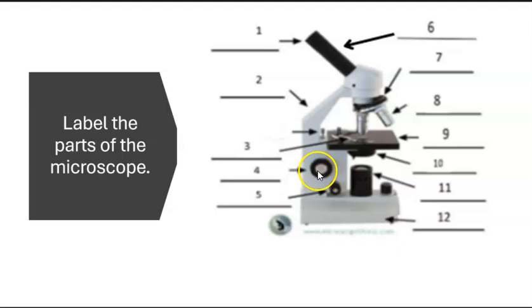Number 4 is the coarse adjustment knob, then the smaller one is the fine adjustment knob. Number 6, this is the draw tube or the body tube. Number 7, it's the revolving nosepiece. Number 8, it's the objective. There are commonly four objectives in the recent compound microscope: the scanner, the low power objective, the high power objective, and the oil immersion objective. The stage is number 9, number 10 is the diaphragm, number 11 is the illuminator, and number 12 is the base.